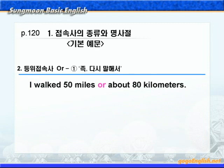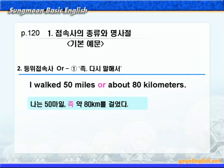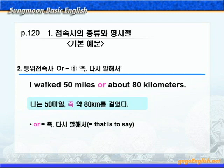다음은 등위접속사 or로 가보겠습니다. 먼저 1번 or가 '즉, 다시 말해서' 이런 의미가 되는 경우를 보겠습니다. '나는 50 miles, or 약 80km를 걸었다.' 여기에서 등위접속사 or는 '혹은'이라는 뜻이 아니라 'that is to say' 즉, 다시 말해서 이런 뜻이 되죠.